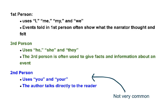When you tell your friend something that happened to you, you're using first-person. When your history textbook talks about something that happened many years ago, the history textbook uses third-person.